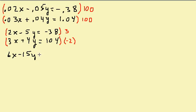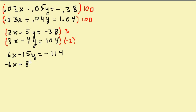Multiplying 3 to the first equation I get 6x minus 15y equals negative 114. Then multiplying negative 2 to the second equation gives me negative 6x minus 8y equals negative 208.